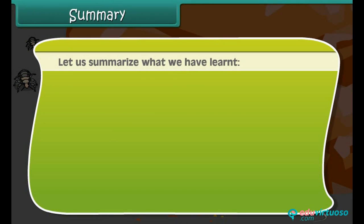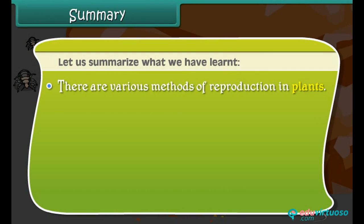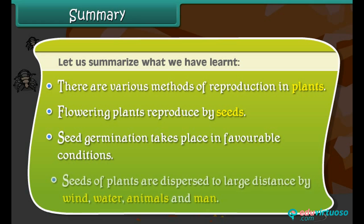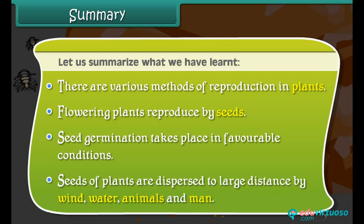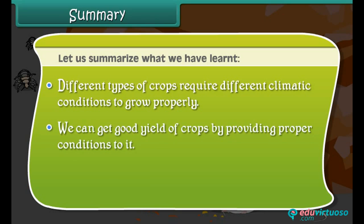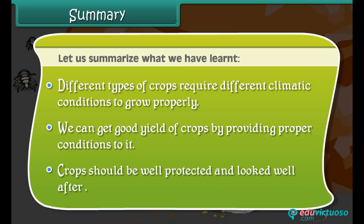Summary: there are various methods of reproduction in plants. Flowering plants reproduce by seeds. Seed germination takes place in favourable conditions. Seeds of plants are dispersed to large distances by wind, water, animals, and man. Different types of crops require different climatic conditions to grow properly. We can get a good yield of crops by providing proper conditions. Crops should be well protected and looked after.